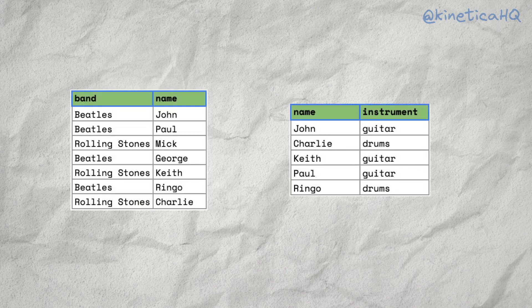No complex data engineering required. Just a few simple SQL queries to plug into streaming data sources like Kafka and to set up the join view. Combining two or more tables using values from a related column is one of the most common tasks when analyzing data.